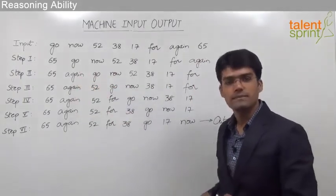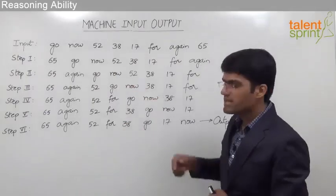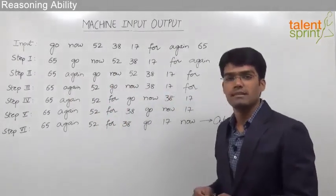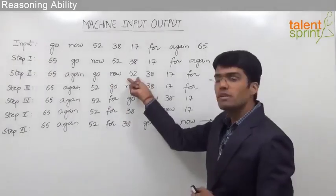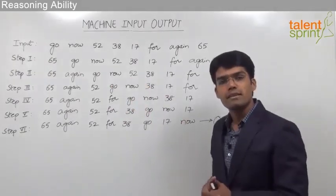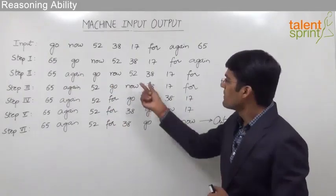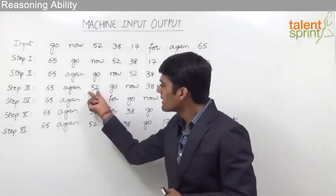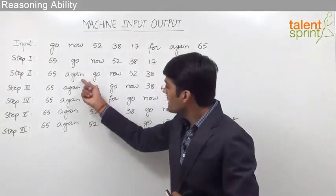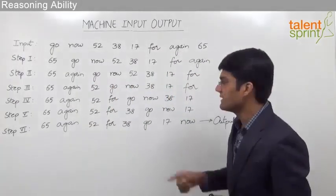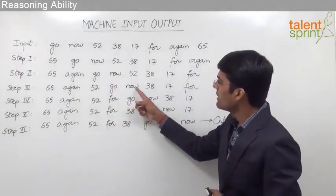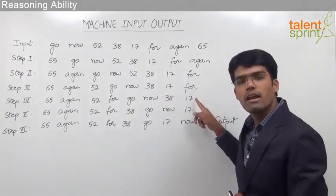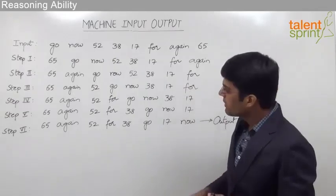The remaining elements — go, now, 52, 38, 17, for — are simply pushed aside. Moving to step 3, after 'again' we need a number, and that number should be 52 as we are following decreasing order. So 52 is brought from its position to the third position in step 3, and the remaining elements are simply pushed aside.